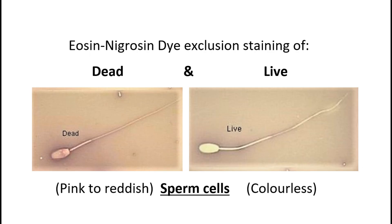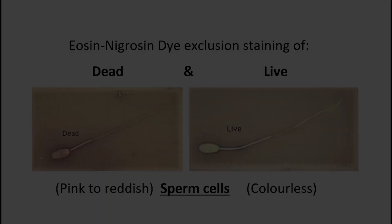A combination of eosin and nigrosin stains is commonly used in sperm viability testing. Make sure to watch my video on how to prepare eosin and nigrosin stain for sperm viability testing by clicking on the link given on the top right corner of the screen or the link given in the video description below.